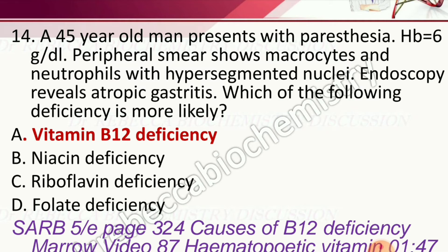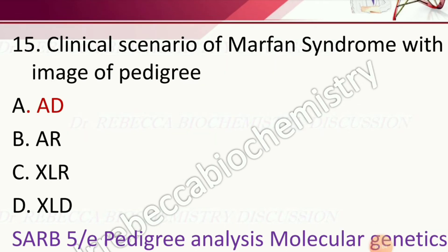Question 14: A 45-year-old man presents with paresthesia, Hb 6 g/dL, peripheral smear shows macrocytes and neutrophils with hypersegmented nuclei, endoscopy reveals atrophic gastritis. Options are riboflavin deficiency, folate deficiency, vitamin B12 deficiency, or niacin deficiency. The correct answer is vitamin B12 deficiency.